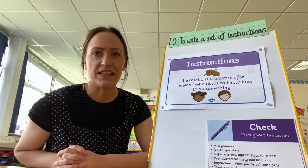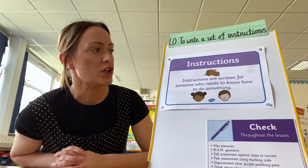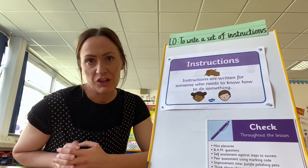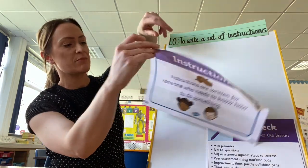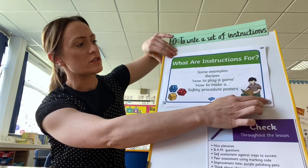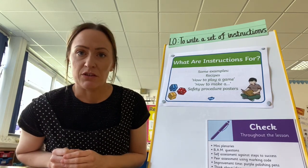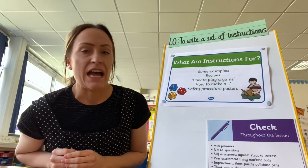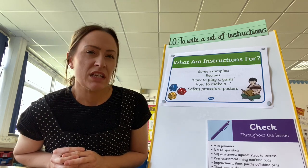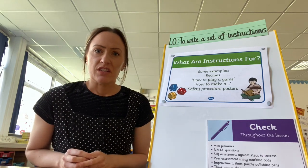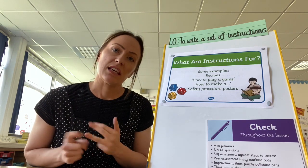Let's have a look at those answers. The first question was: why do we need instructions? Well, instructions are written for someone who needs to know how to do something. We can't assume that everybody knows how to do everything. We might need instructions for recipes, for how to play a particular game, or how to make something like Mr. Preston's amazing shortbread. Or maybe we need to inform somebody on how to keep safe. So instructions are there to help us learn, to provide us with knowledge, to make us have fun, and to keep us safe.